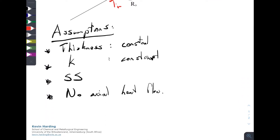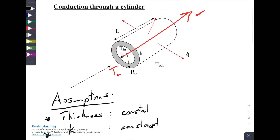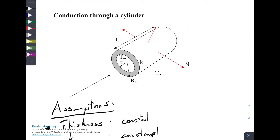The last point on our list is not really an assumption but something obvious: the area through which heat flows is not constant. If we look at the pipe and start on the inside and work our way out, we start at the inside radius r_i, and the area we use is the surface area on the inside. As we move outward, the radius gets bigger and the area gets bigger, because the area is equal to 2πr times the length L.